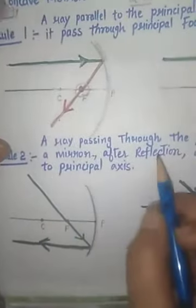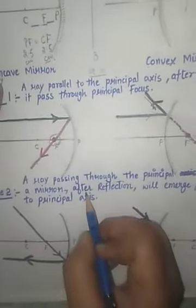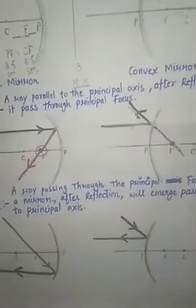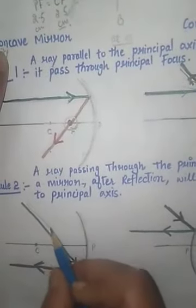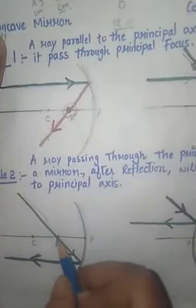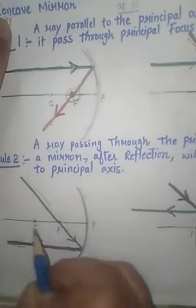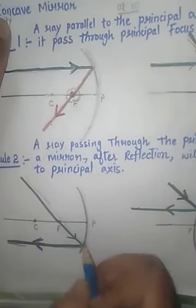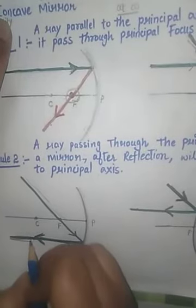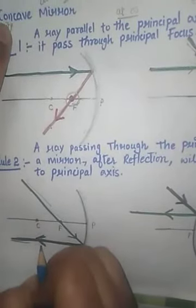Rule number two: a ray passing through the principal focus of a mirror, after reflection, will emerge parallel to the principal axis. That means when a ray comes passing through the focus, it gets reflected and becomes parallel to the principal axis.